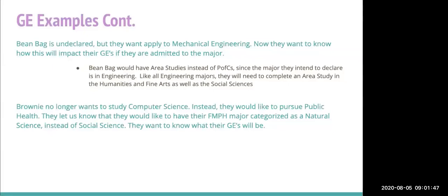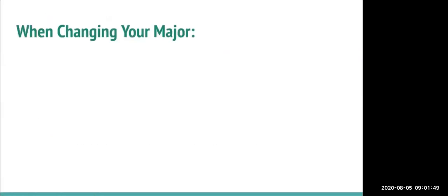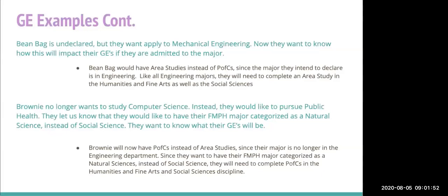Finally, Brownie no longer wants to study computer science and would like to pursue public health, with their FMPH major categorized as a natural science instead of a social science. Brownie will now have PFCs instead of area studies since their major is no longer in engineering. Since they want the FMPH major as natural sciences, they will need to complete PFCs in humanities and fine arts and social sciences.